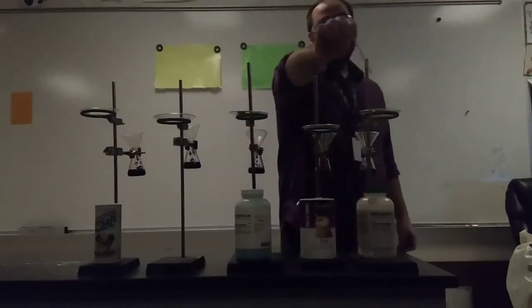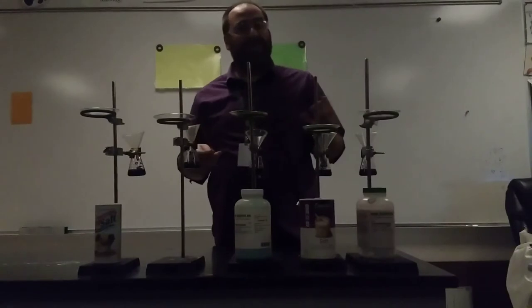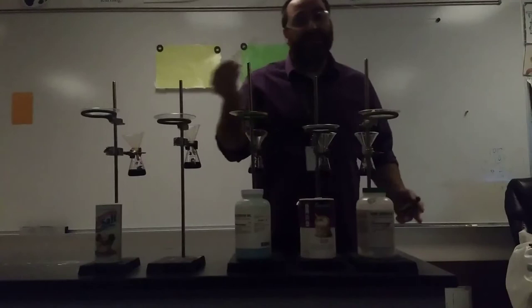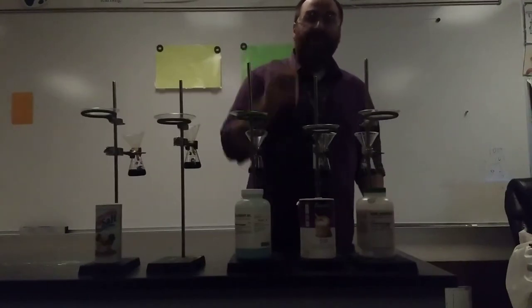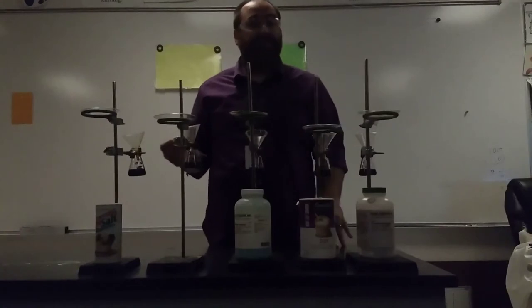Over here on the very right we have strontium chloride. Strontium chloride is a strontium atom, which is a metal, attached to a chlorine atom, which is a non-metal, specifically two chlorine atoms. Right here is table salt, the salt you're mostly familiar with. Table salt is sodium chloride.